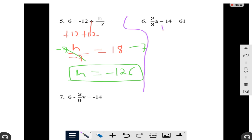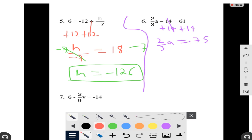So we're going to add 14 to both sides, so that's going to be 2 thirds A equals to 61 plus 14, that's going to be 75. Okay, so one thing we're using here, and even though I told you before, it's called a reciprocal.